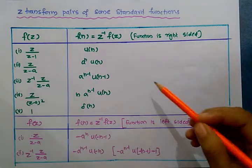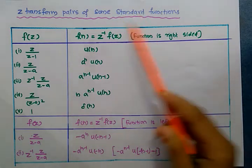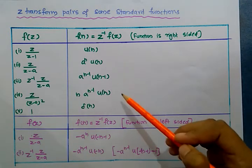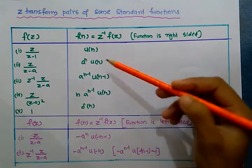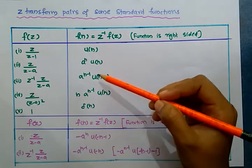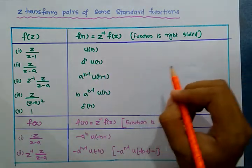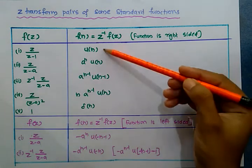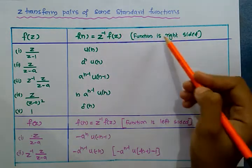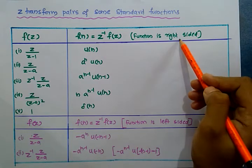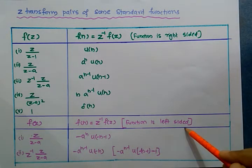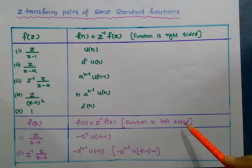For finding the inverse Z-transform, we have to be familiar with some standard functions. These standard equations should be studied well because we need to use them while solving the inverse Z-transform. Some equations represent that the function is right-sided, meaning the function is causal. The other equations represent that the function is left-sided, meaning the function is anti-causal.